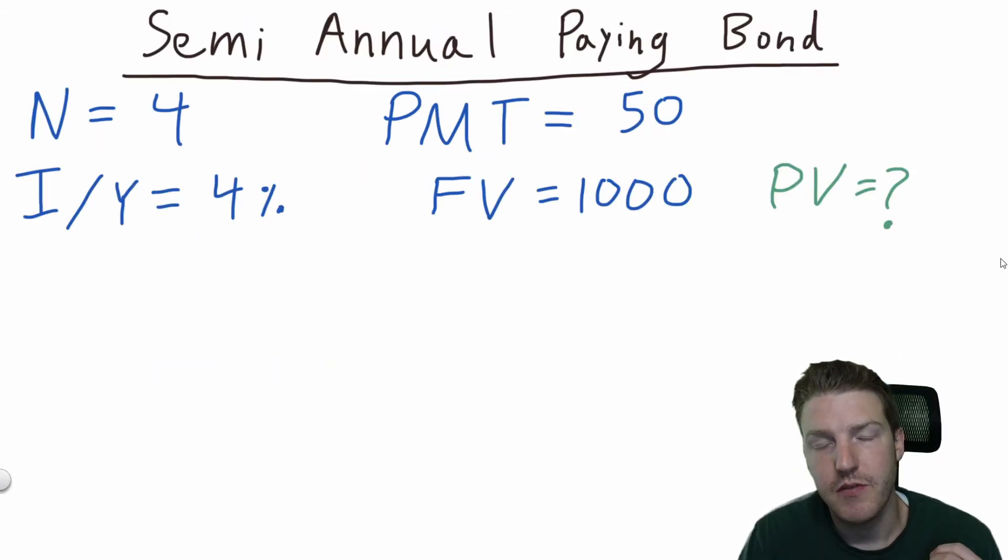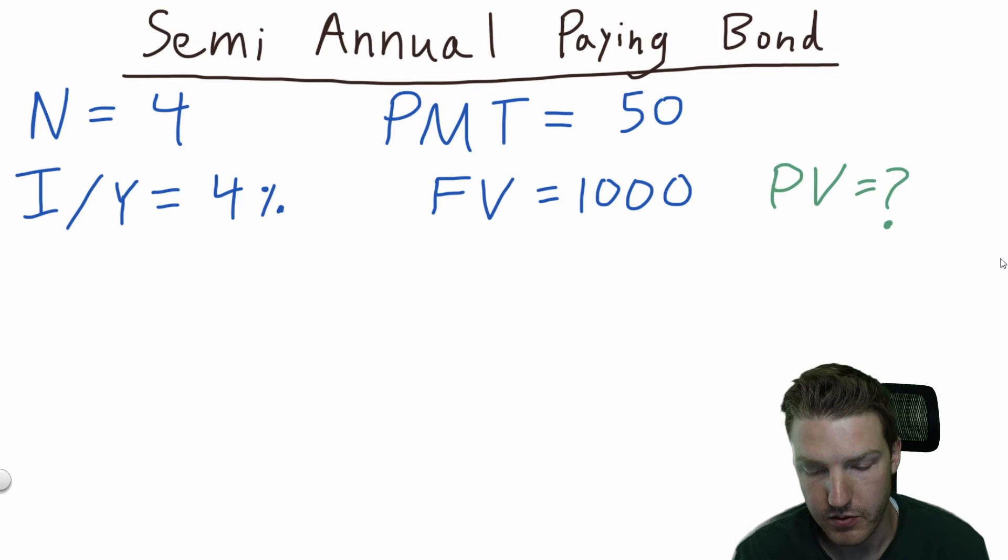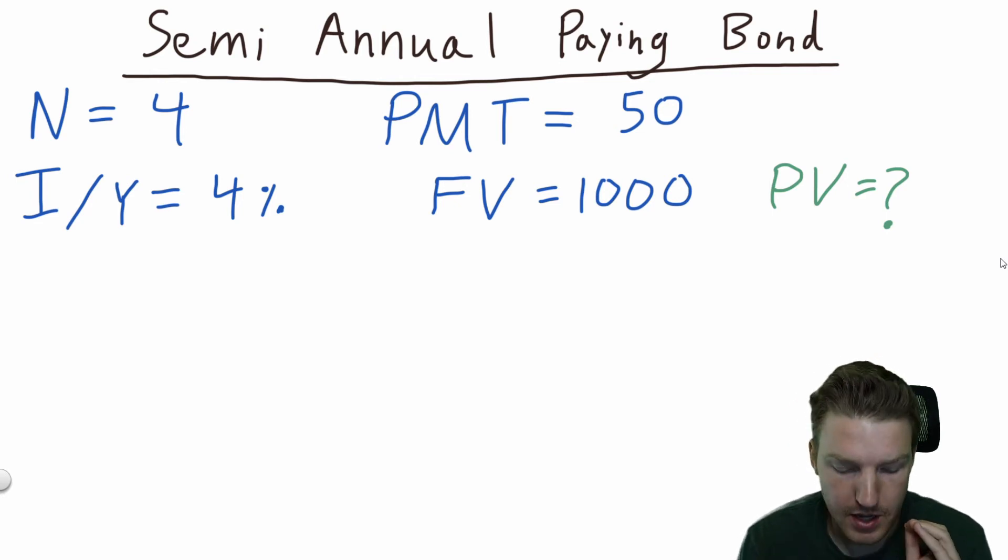You could be asked to find the price of a bond that pays semi-annual. So let's go with the exact same specifications of the first bond we valued, which had four years, a payment of 50, yield to maturity of 4%, and a fair value of $1,000. How would we adjust this for if the bond paid semi-annually?